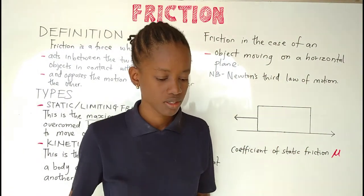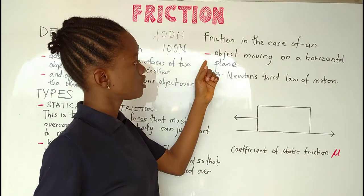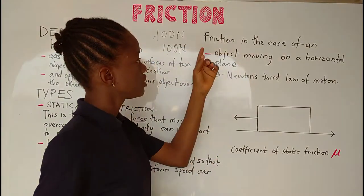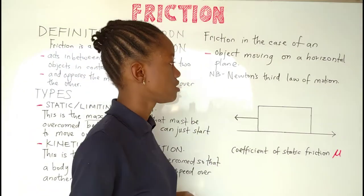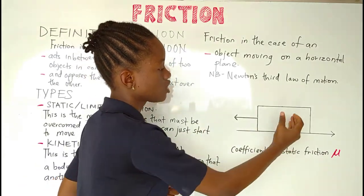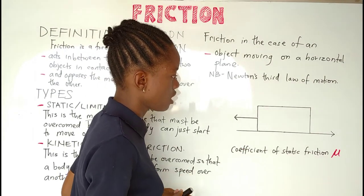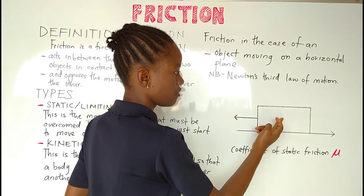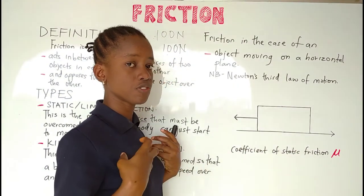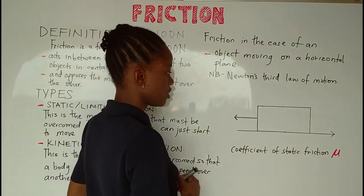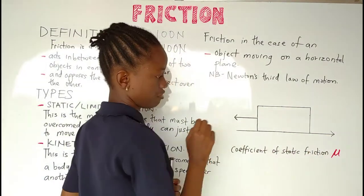Now let's look at friction in two instances. The first case is friction in an object moving on a horizontal plane. We have a diagram where this object is moving in one direction. Friction is going to apply here because the surface of this object is in contact with the surface of this horizontal plane, and it is in motion — the conditions for friction to be present are met.